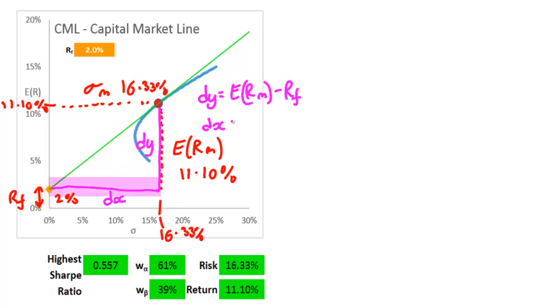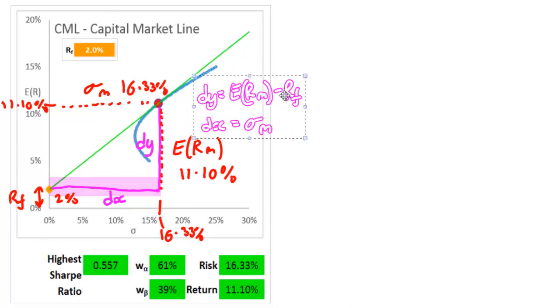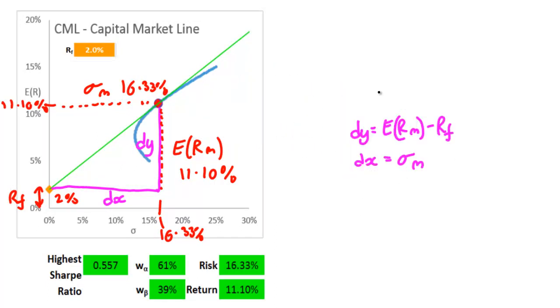DX or the run is the market risk or its sigma volatility. So DY over DX or the slope of the line is ERM minus RF all divided by the market risk of sigma M.